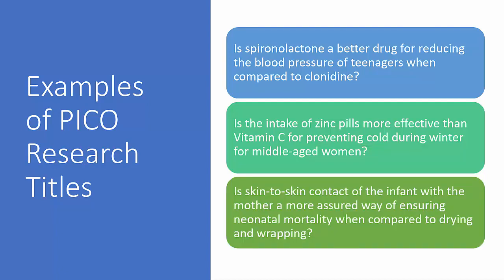The last PICO example: is skin-to-skin contact of the infant with the mother a more assured way of ensuring neonatal survival when compared to drying and wrapping? The population is neonatal infants, i.e. newborn babies up to the age of 28 days; the intervention is skin-to-skin contact; the control or comparison group will have drying and wrapping instead; and the outcome is measures of mortality rates.